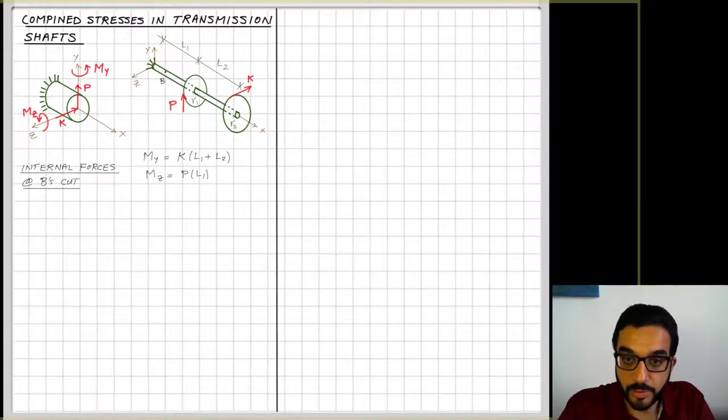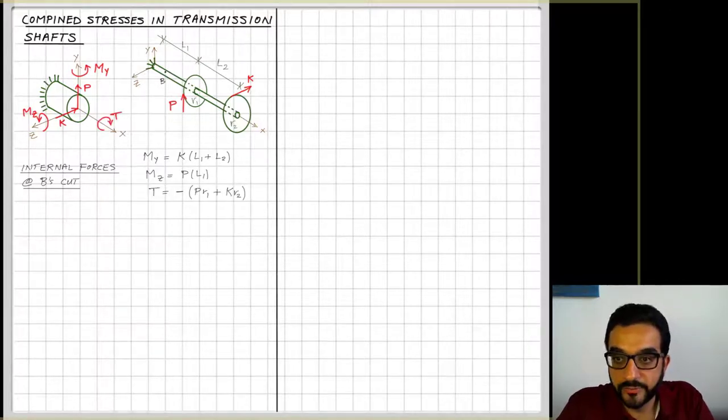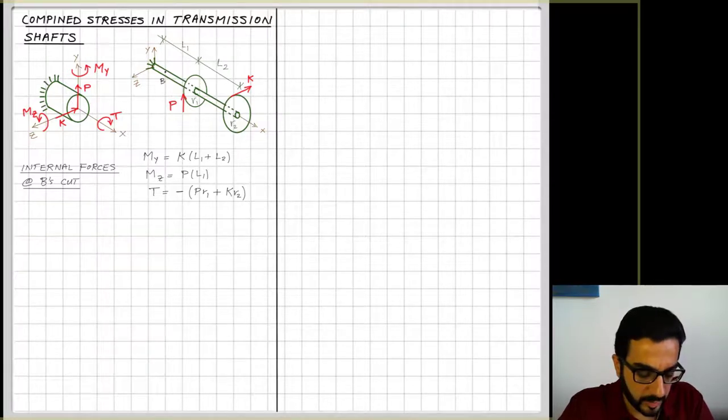And if I look at the moment around the x, which I will call here T, torque is equal to the torque from P and K around the x axis. So each one is multiplied by its gear radius here, R1 or R2. So now I have the internal forces.